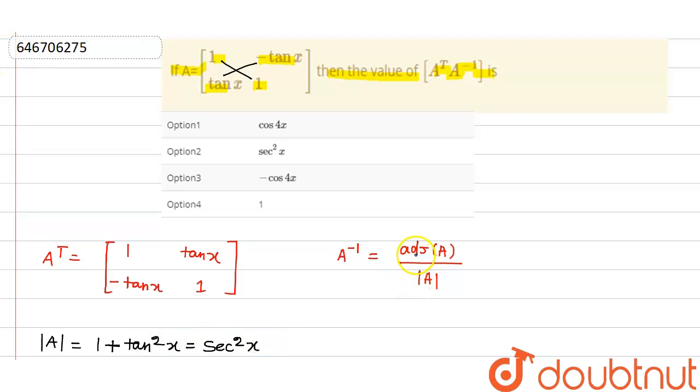And then we need to find adjoint of A. The adjoint of A can be defined as adjoint of A.